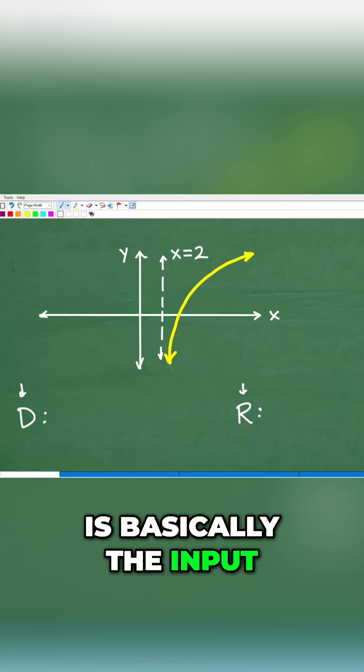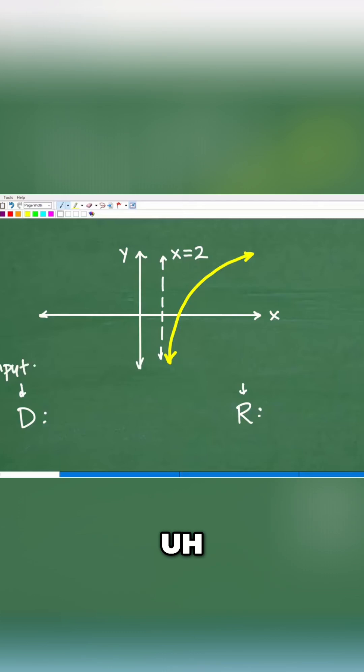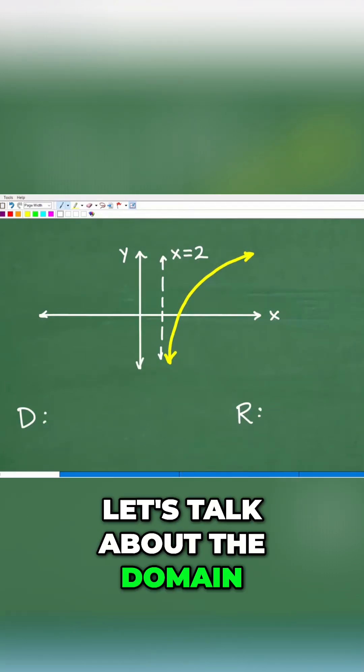The domain is basically the input, the allowable input values. I'm just going to write this here. Now, let's talk about the domain.